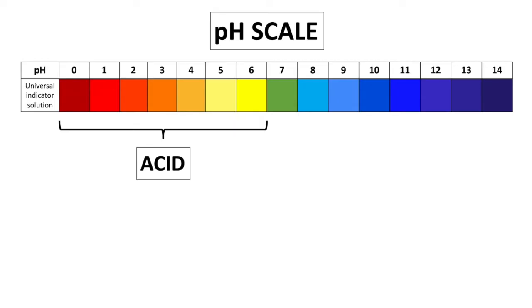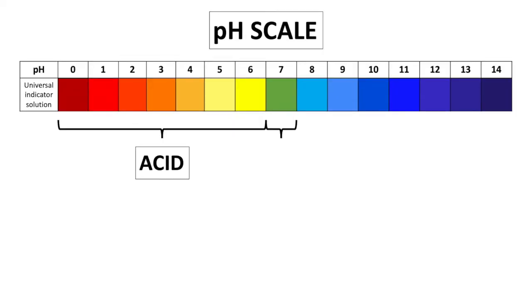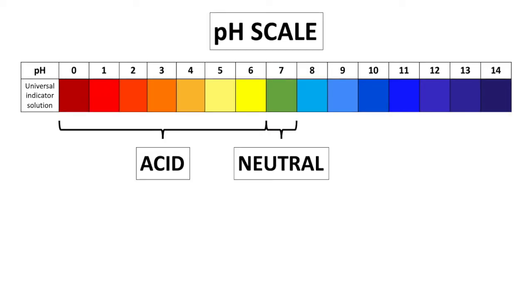Whereas if the colour change is green, this tells us the pH is 7 and this tells us the solution is neutral. The solution is neither acidic or alkaline.